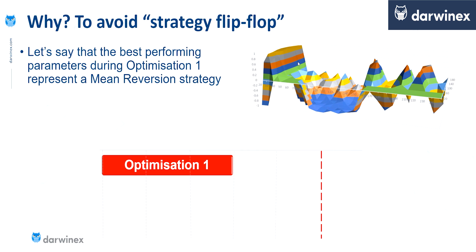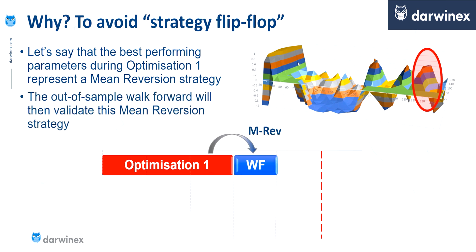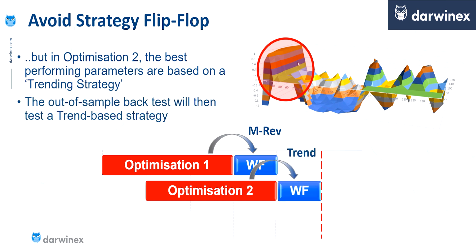So let's say that in stage one of the walk-forward analysis, the optimization finds that this is the best area on the surface. And so it's these parameter values that get passed forward into the walk-forward validation phase. And we've already said that these represent a mean reverting type system. Now it's possible that in the second stage, which of course is over a different period of time, the best performing parameters might come from this area on the left of the surface. And because these are the parameter values that represent the trend-following system, these are the values that get carried forward into the walk-forward validation stage.